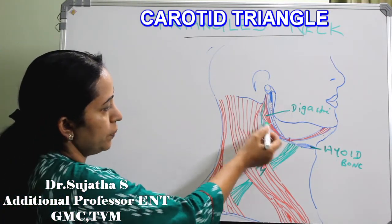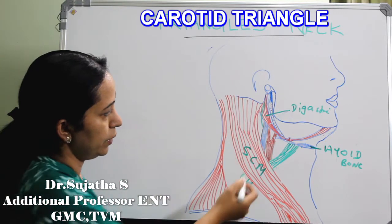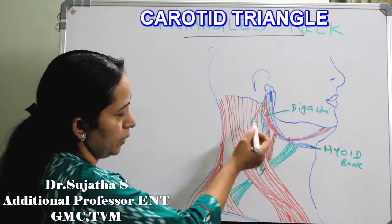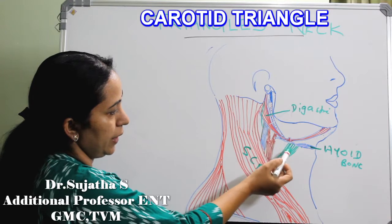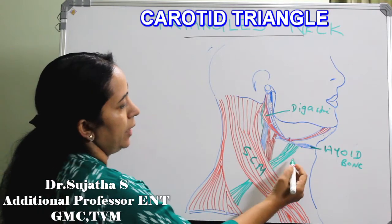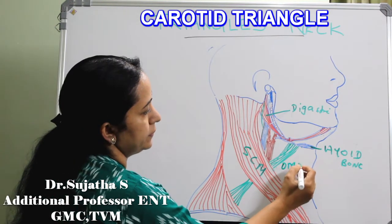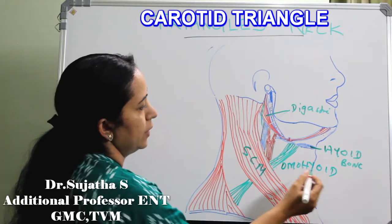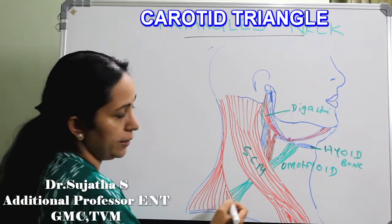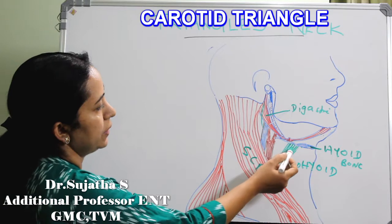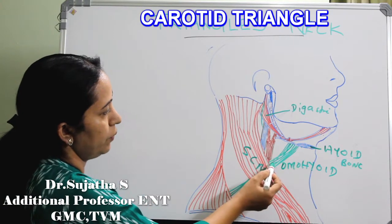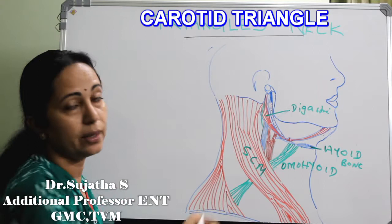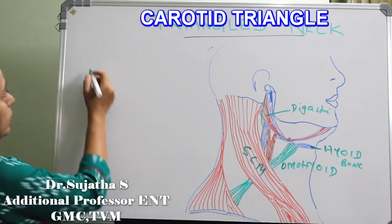Lateral to the posterior belly, in this space, the posterior belly of digastric and the omohyoid — which has a superior belly and an inferior belly — between the superior belly of omohyoid, the digastric posterior belly, and the sternocleidomastoid, comes the carotid triangle.